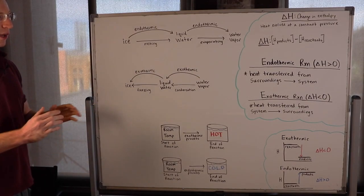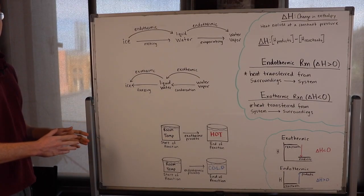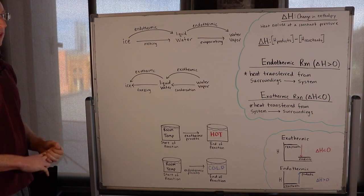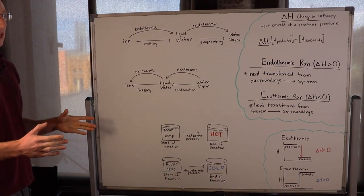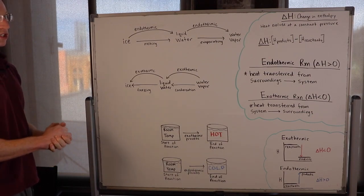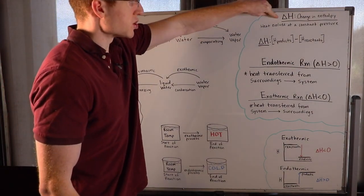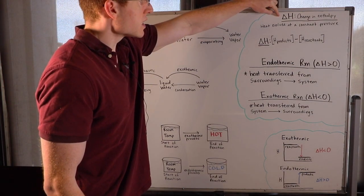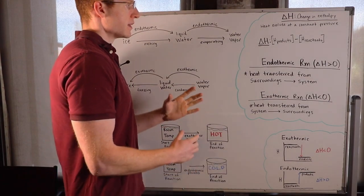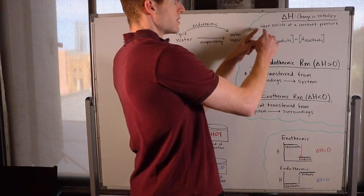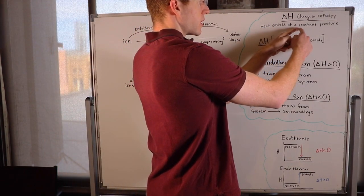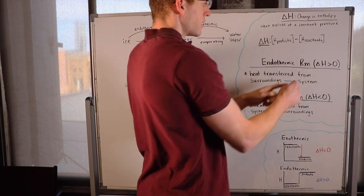In this video I'm going to show you how you can tell whether a common chemical process is endothermic or exothermic. The way that we tell whether a reaction or process is endothermic or exothermic is with delta H. Delta H denotes the change in enthalpy, which simply means the heat evolved or transferred in a reaction or process at a constant pressure.